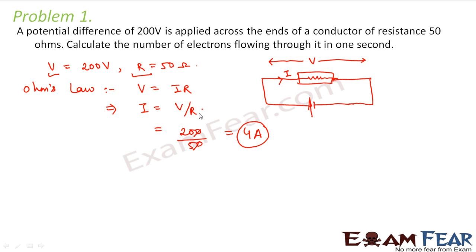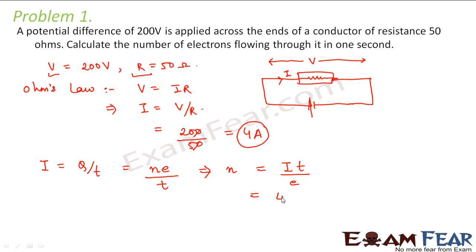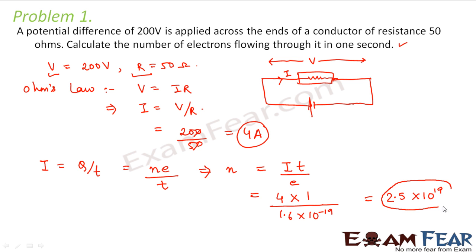We have to calculate the number of electrons which will flow through it in one second. We define current as charge per unit time, and charge is nothing but number of electrons times the charge on each electron. So current I is equal to NE divided by T. From this, N will be equal to I times T divided by E. Here I is 4 amperes, T is 1 second, and E is 1.6 into 10 to the power minus 19 coulombs. This value comes out to be 2.5 into 10 to the power 19 electrons flowing through the conductor in 1 second.